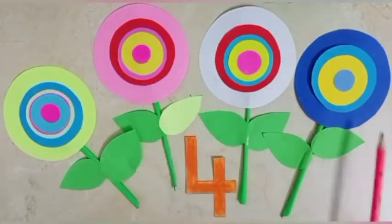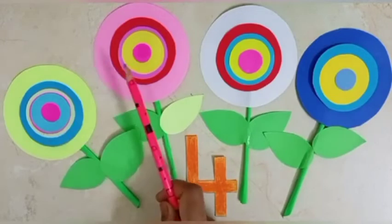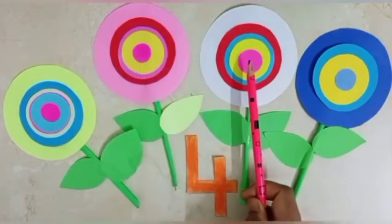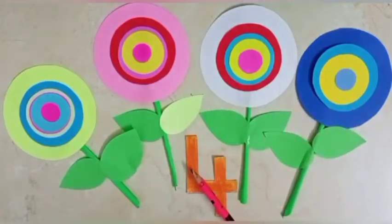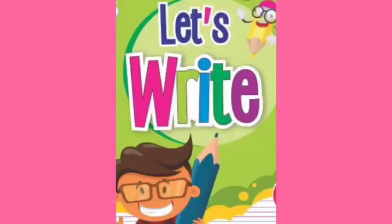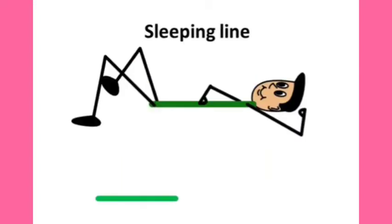Now let's count again. 1, 2, 3, 4. There are 4 flowers. Now let's write number 4. See, we are using standing line and sleeping line. We are going to make number 4.